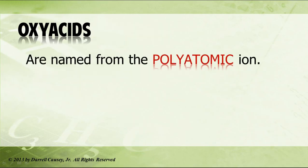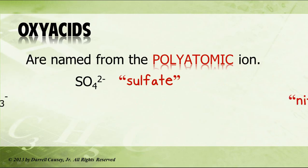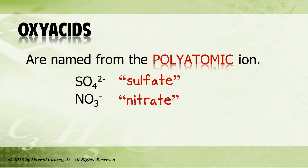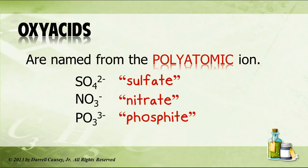Oxyacids are named from the polyatomic ion. So in SO4, we'd use sulfate. In NO3, we'd use nitrate. And PO3 is phosphite. How these end is very important, so we need to know the polyatomic ion — that's why we need the polyatomic ion sheet out, or have them memorized.